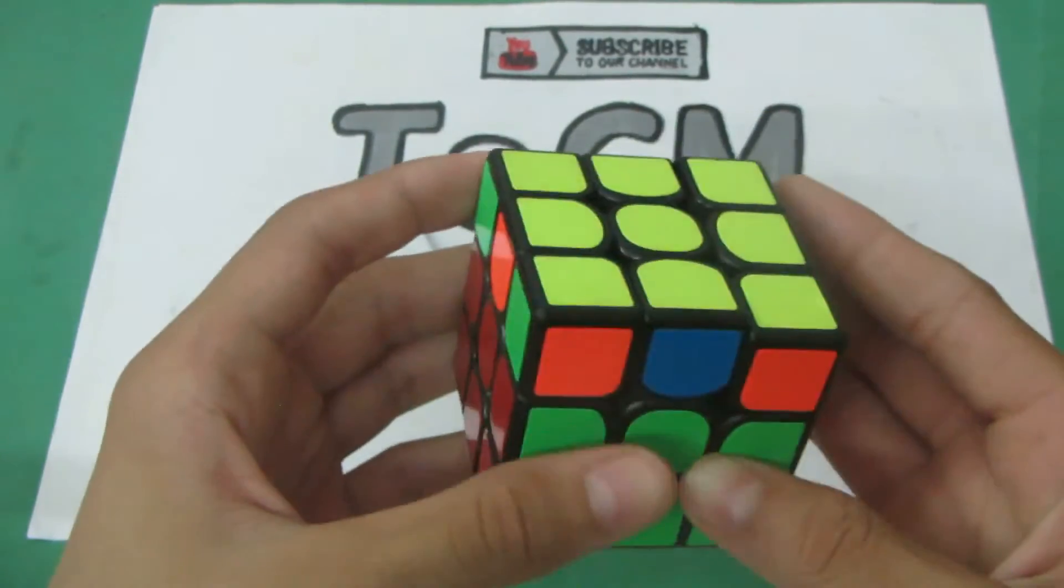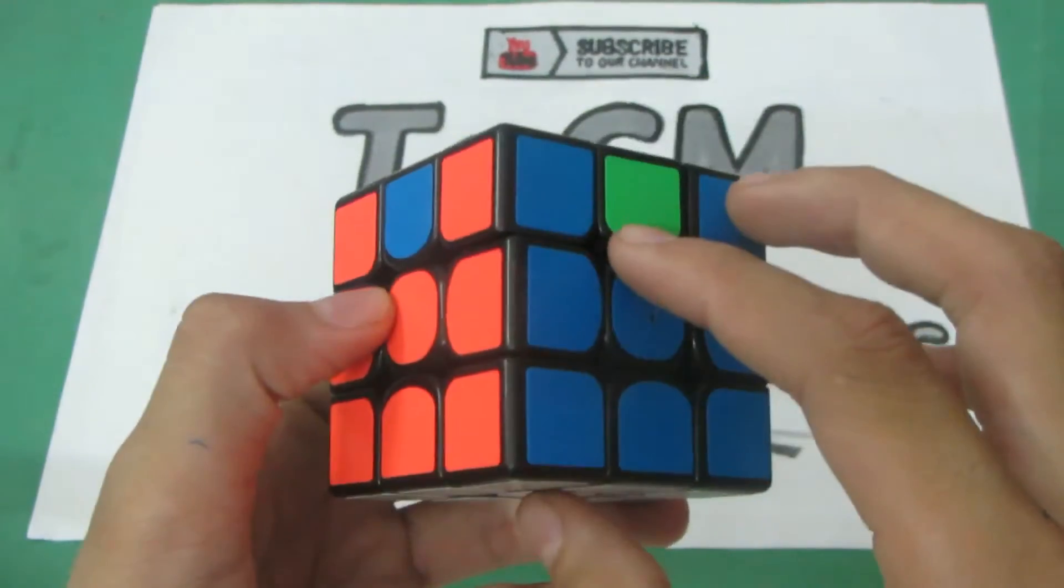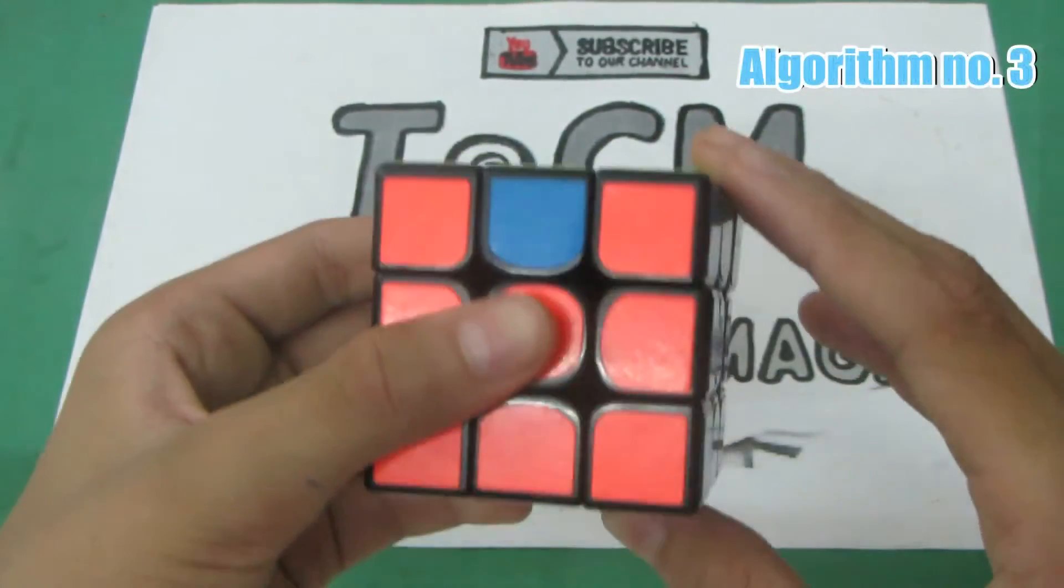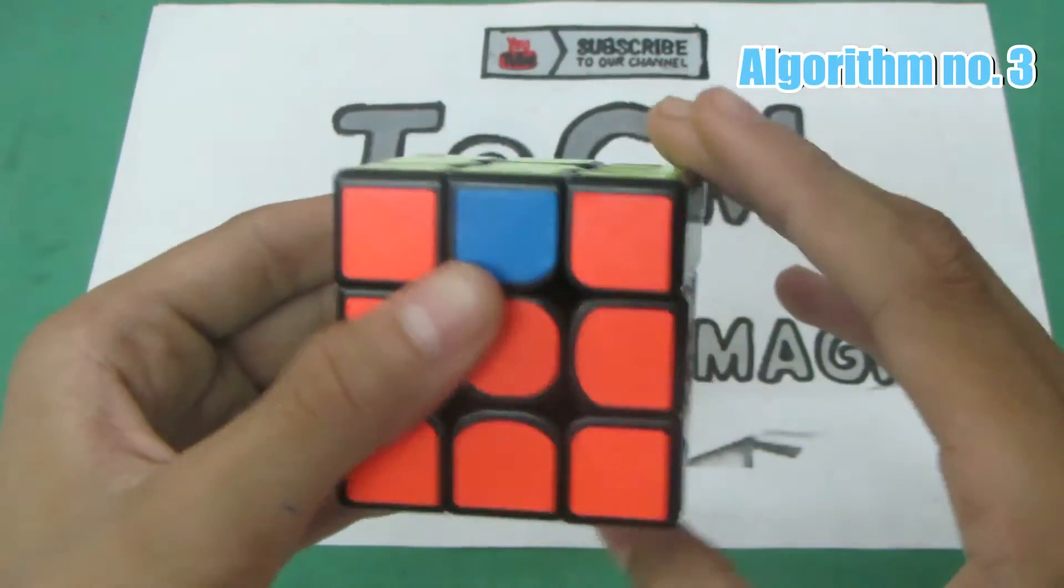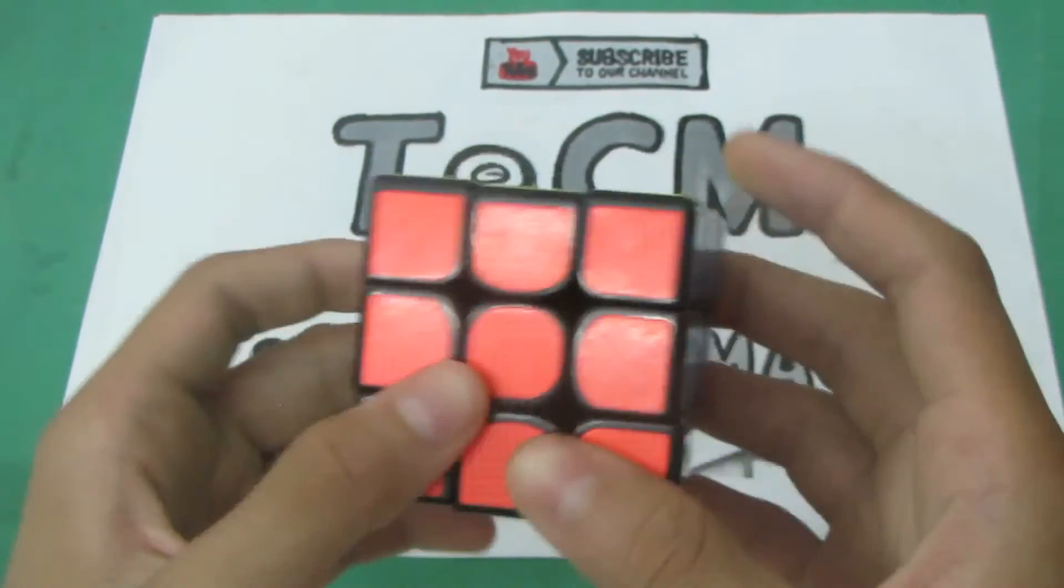Then you'll probably get one of the cases from those six algorithms. Now this time it's the anti-clockwise rotation of the edges. So I'll do the algorithm. And the cube solved.